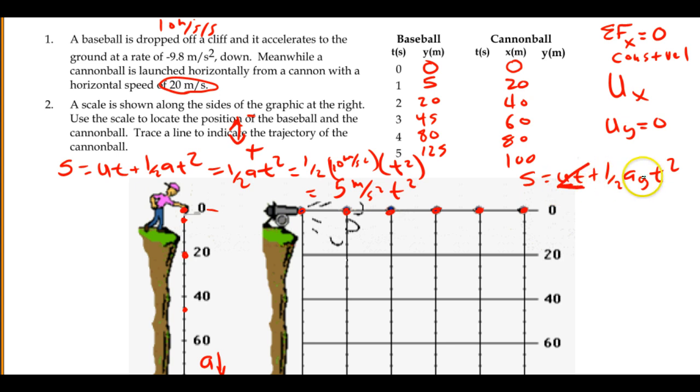Once that turns to 0, and we know that this is g, we're right back where we were before. And so our values are going to be exactly the same as they were for the dropped baseball. We'll start at 0, then we'll go to 5, then we'll go to 20, then we'll go to 45, then we'll go to 80, and then we'll go to 125.